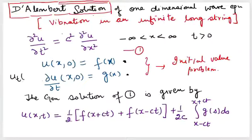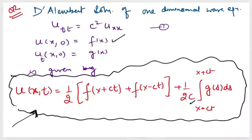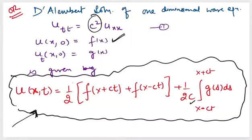Sometimes the velocity can be written in brief notation using partial derivatives, either in del notation or another form. Remember this solution — I am not going into the derivation. You need to find c by comparing with the wave equation, f(x) from the initial position, and g(x) from the velocity condition. The variable s in the integral is just a dummy integration variable.